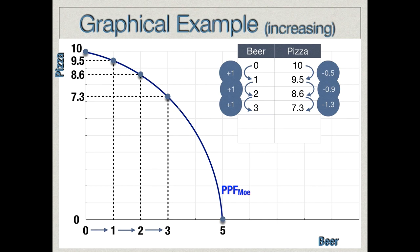The fundamental graphical difference is this: a production possibilities frontier that exhibits constant opportunity cost is a straight line, while a PPF that exhibits increasing opportunity cost is a curve. The slope of the production possibilities frontier is the measure of the opportunity cost. On the curved PPF, the slope is changing depending upon where you are on the frontier — which is why the opportunity cost increases as production of beer rises. The assumption about opportunity cost is what determines the shape of the production possibilities frontier.